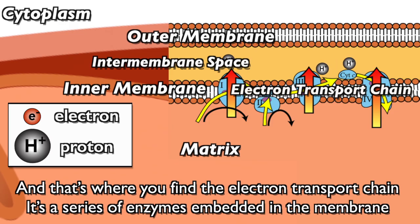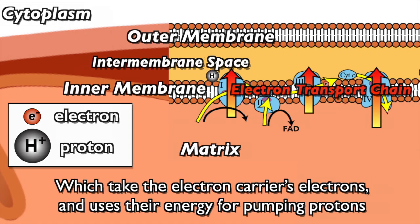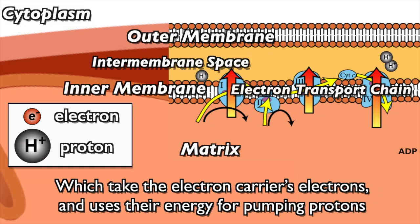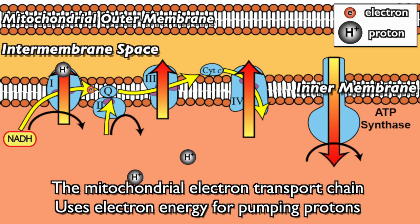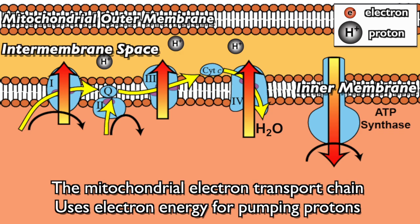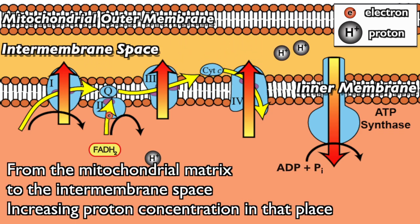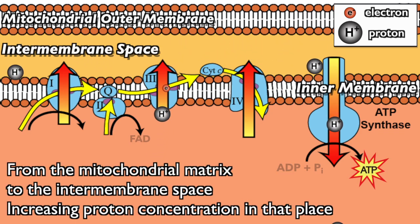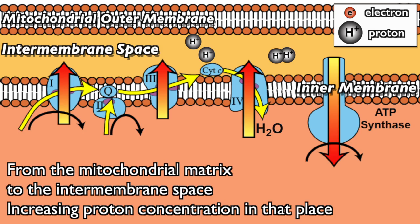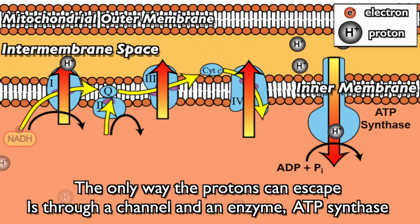It's a series of enzymes embedded in the membrane which take the electron carriers' electrons and use their energy for pumping protons. The mitochondrial electron transport chain pumps protons from the mitochondrial matrix to the intermembrane space, increasing proton concentration in that place.